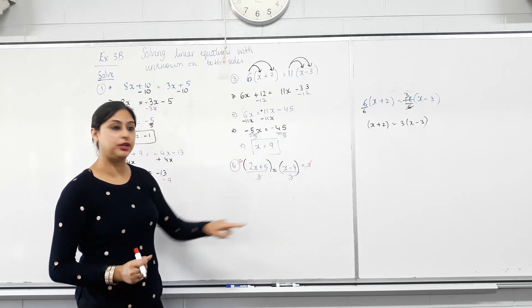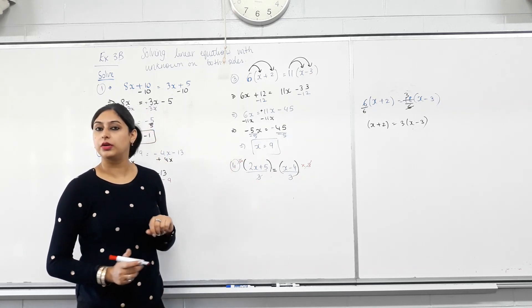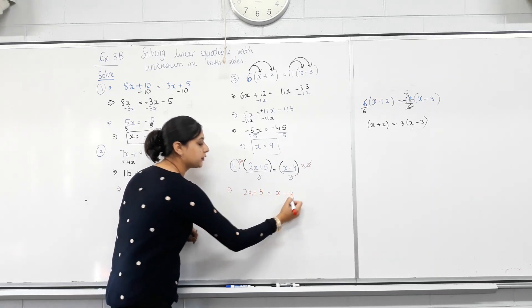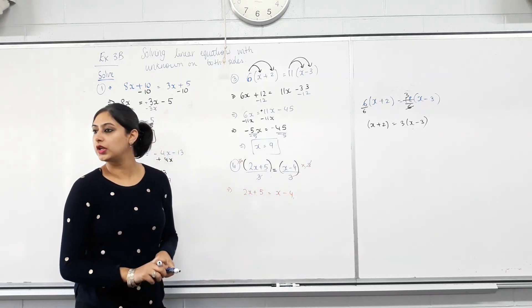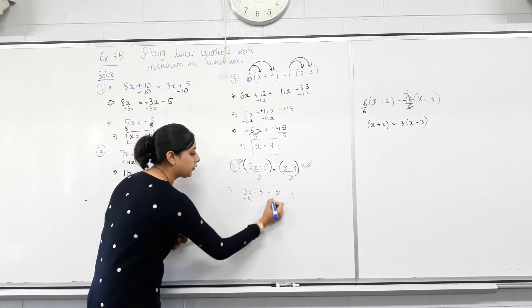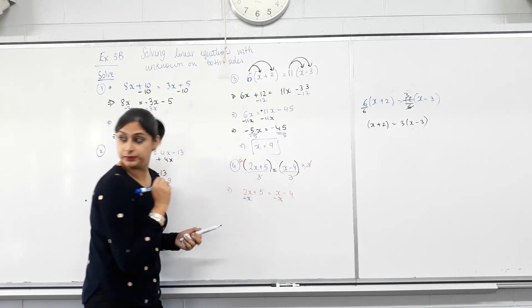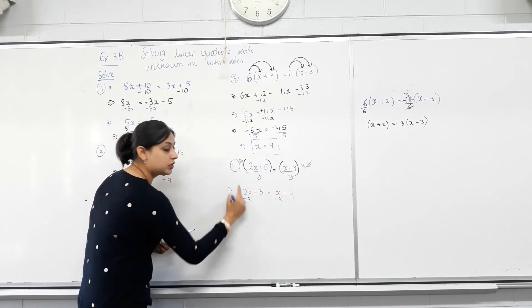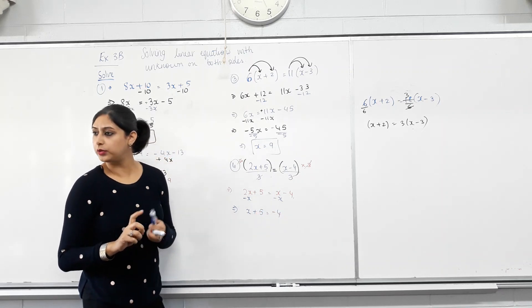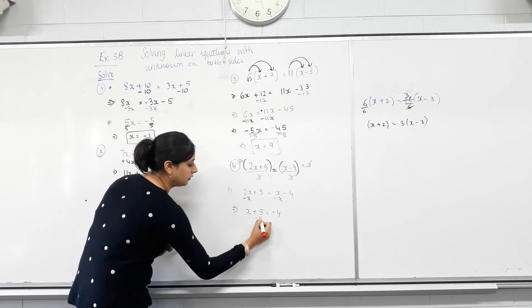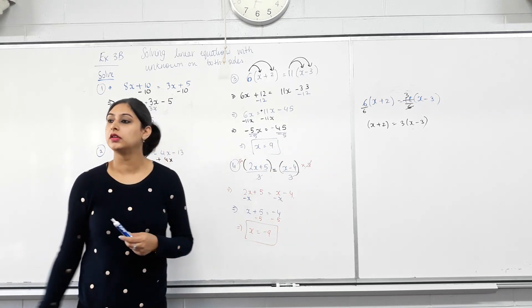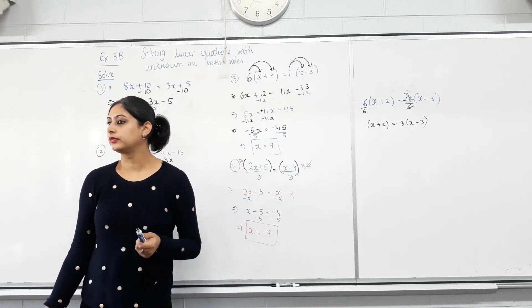I'll multiply both sides by 3. I got rid of the fractions straight away. So, what am I left with? 2x plus 5 equals x minus 4. Simple question now. So, how you deal with the question depends on the numbers. Can I minus x from both sides because it's plus x? Yes. 2x take away x is x. Minus 5 on both sides. x equals negative 9. Any questions? That's it.